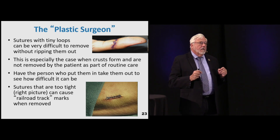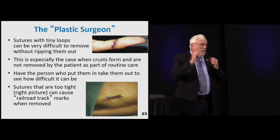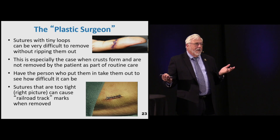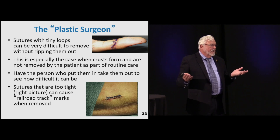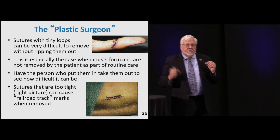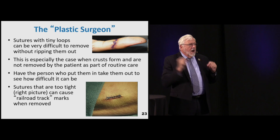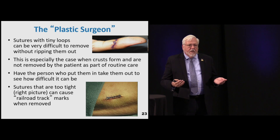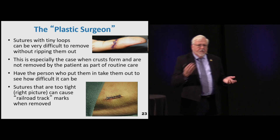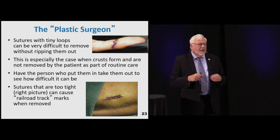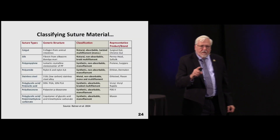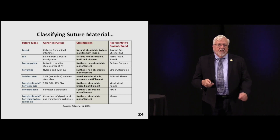Sutures with tiny loops can be really difficult. Anybody who sutures a wound ought to be the person who takes out the sutures - we've all seen sutures so tiny you need a microscope to remove them, risking more damage trying to pull them out. Make sure any crust formation is removed as best as possible. If sutures are too tight you may get railroad tracking - that's permanent. There's a great graph for classifying suture material, types, generic structure, and classifications.